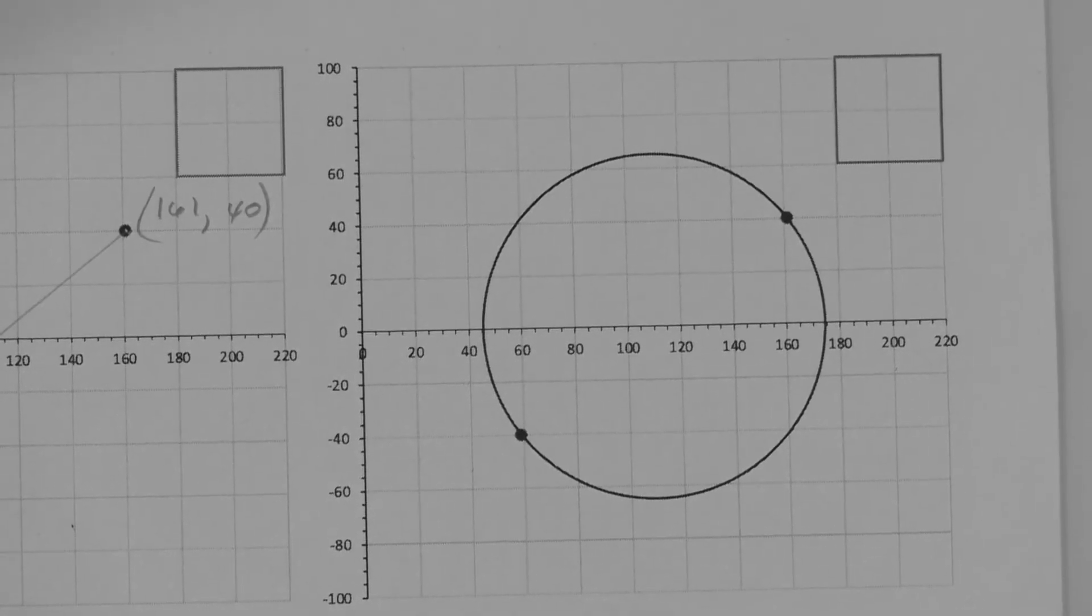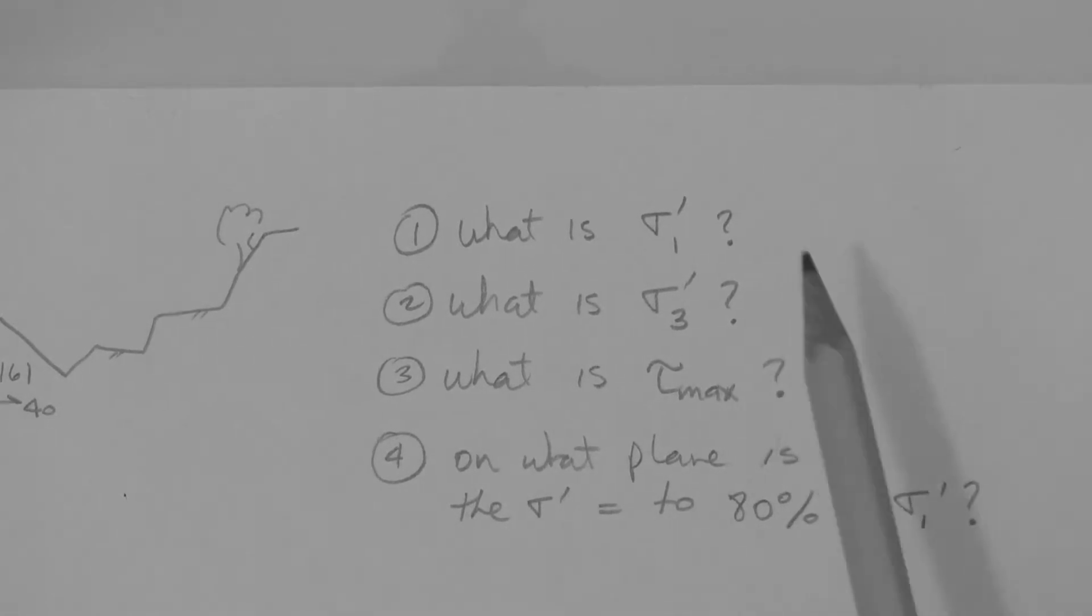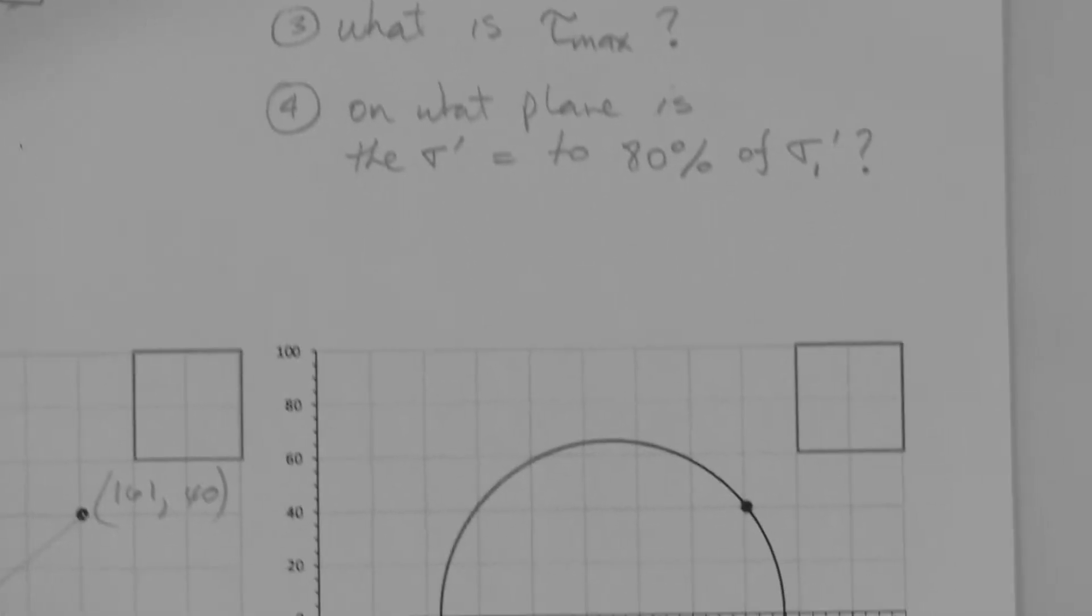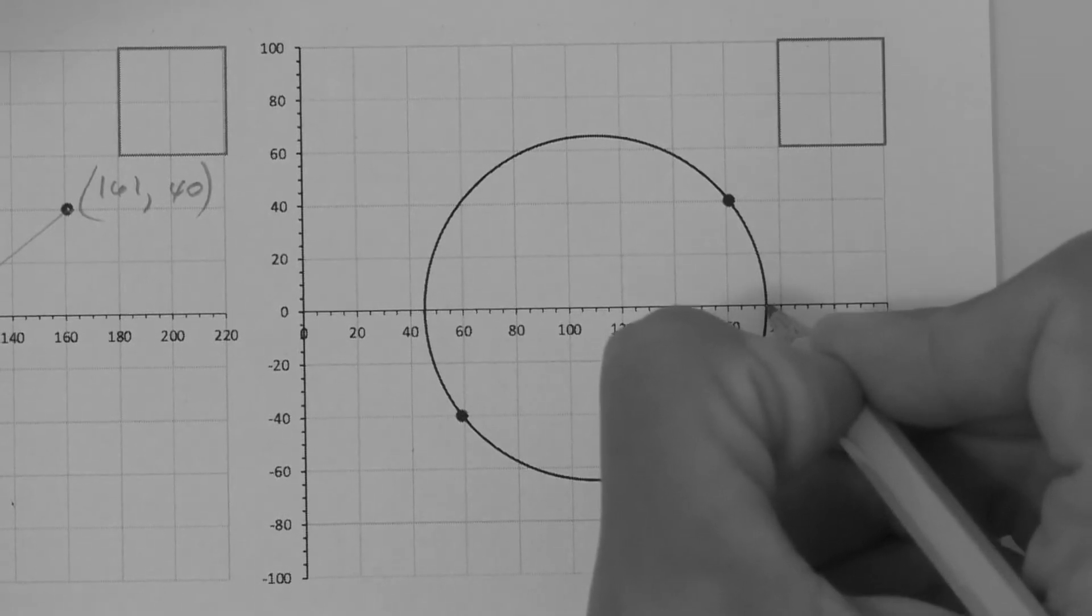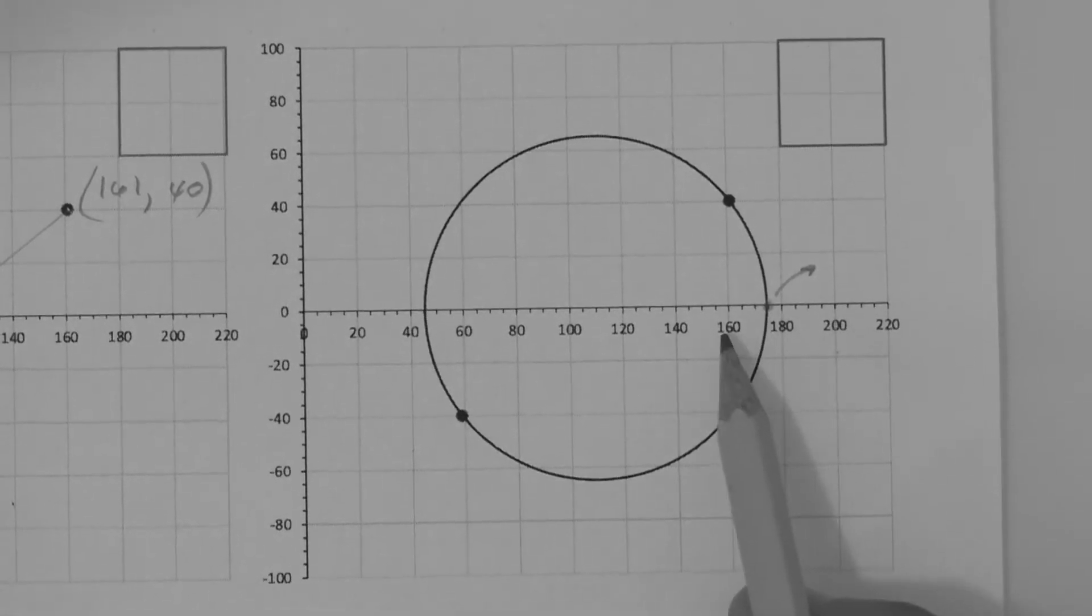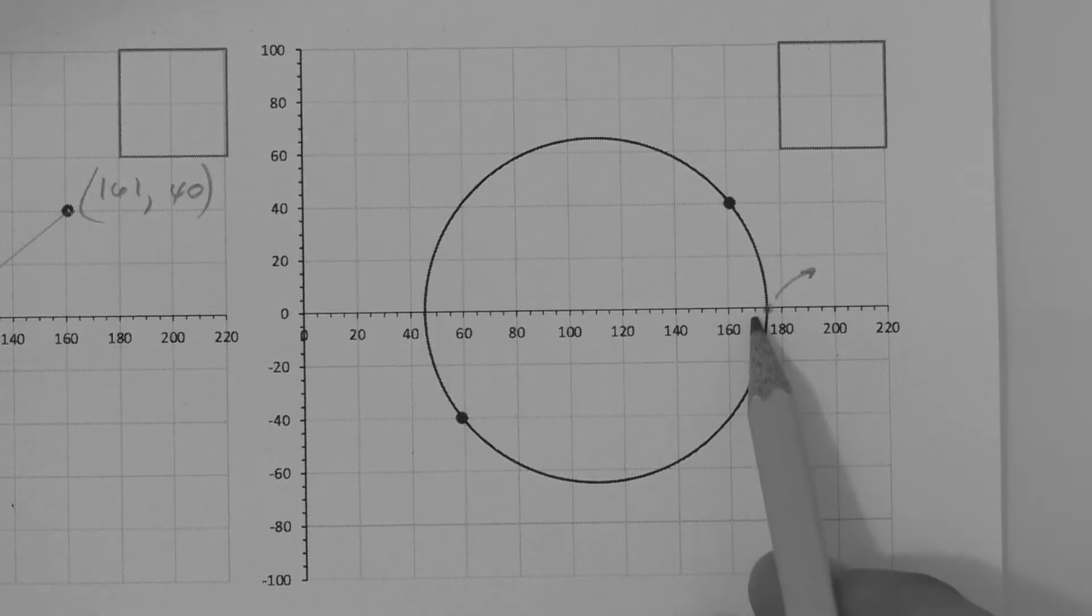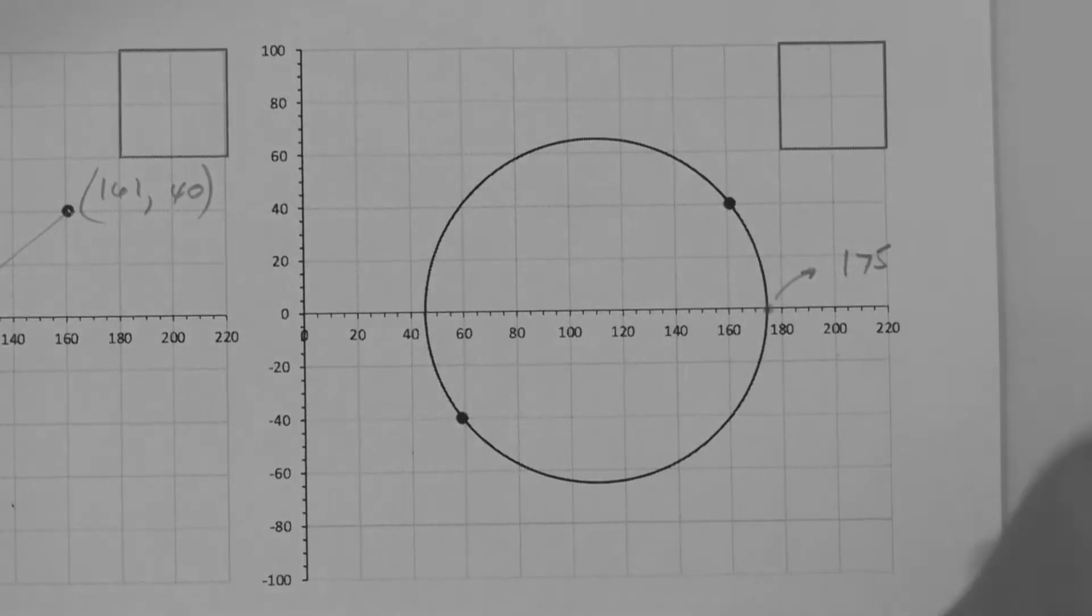So let's now look at the questions. What is the magnitude of the major principal effective stress? Well, the major principal effective stress magnitude, or value, is this right here. So you can read it, this is 160, this is 170, so it's 175 kPa.